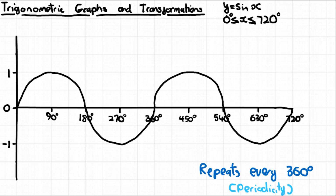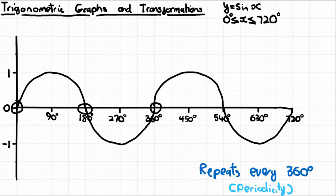The key features of the graph repeat every 360 degrees. It equals 1 at 90 degrees and then again 360 degrees later at 450; it equals -1 at 270 and again at 630. For the zeros, there are two per 360 degrees, so they repeat every 180 degrees: 0, 180, 360, 540, 720.